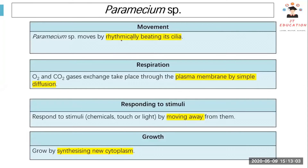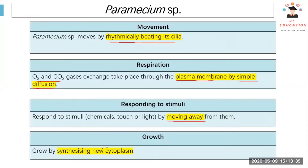Paramecium moves by rhythmically beating its cilia, which allows it to move in various directions. For respiration, oxygen and carbon dioxide gases exchange through the plasma membrane by simple diffusion. Paramecium responds to stimuli by moving away from them. For growth, just like amoeba, it synthesizes new cytoplasm. We can see that amoeba and paramecium share many similarities.